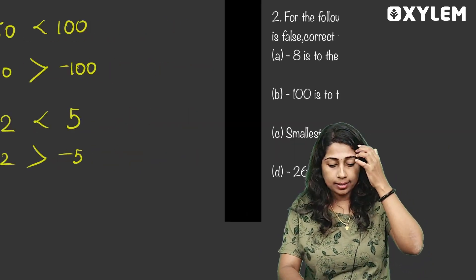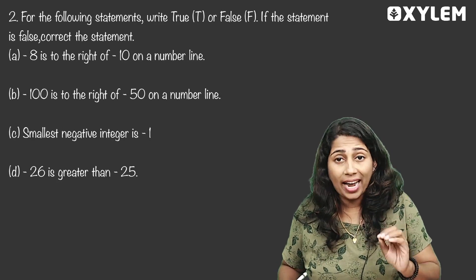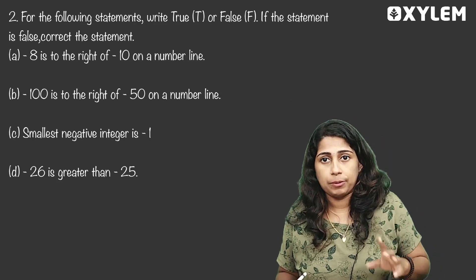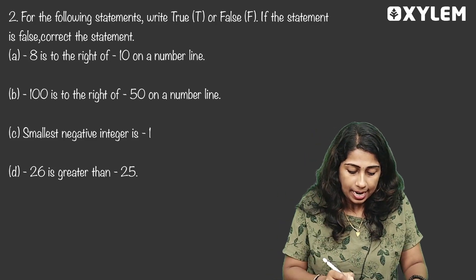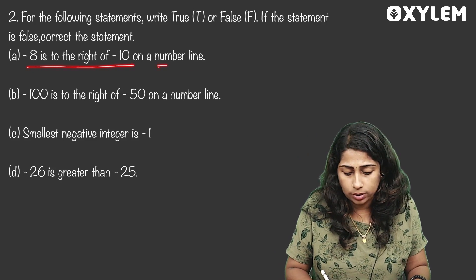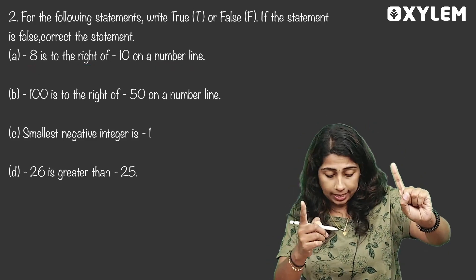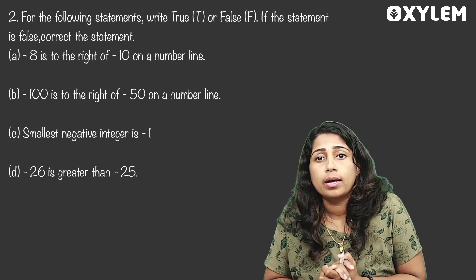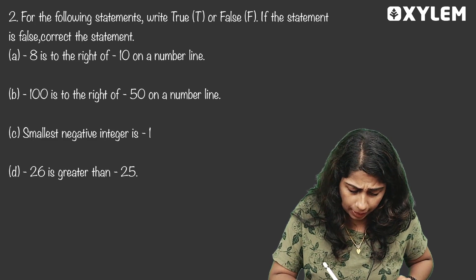This is the next question. For the following statements, write true or false. If the statement is false, correct the statement. First sentence: Negative 8 is to the right of negative 10 on the number line. Let's look at negative 8 and negative 10.